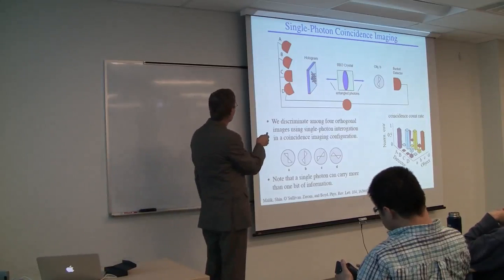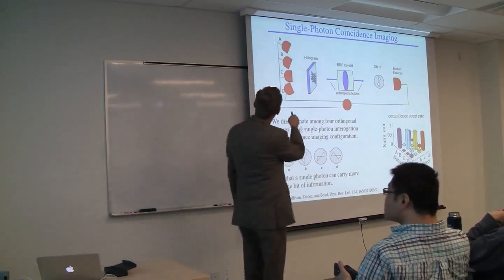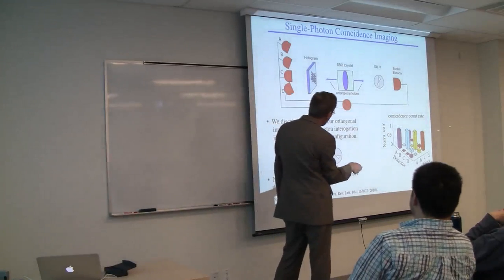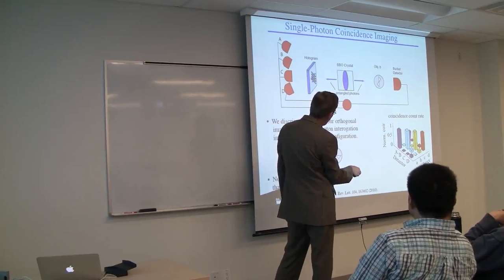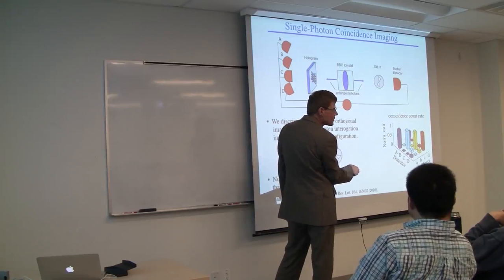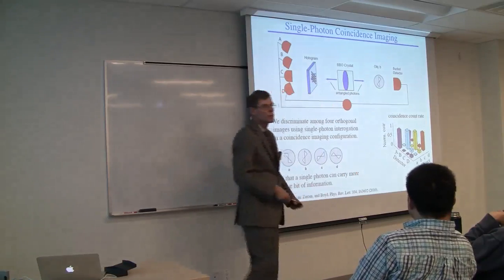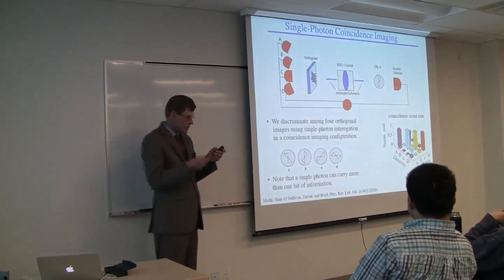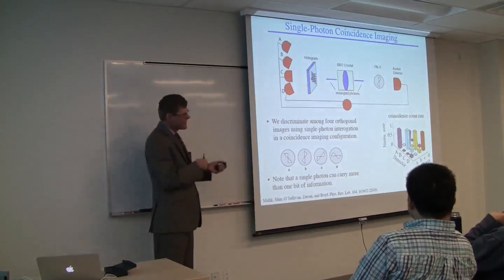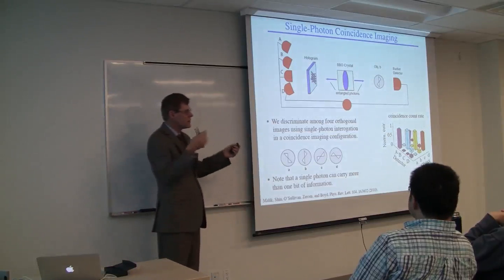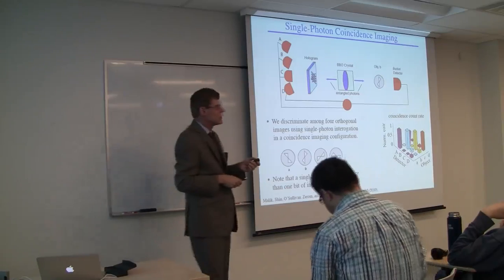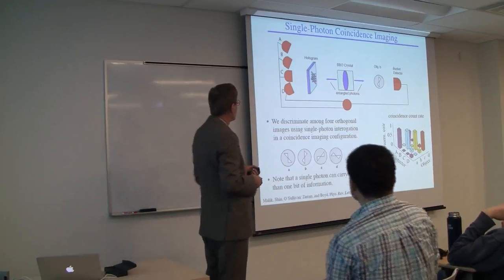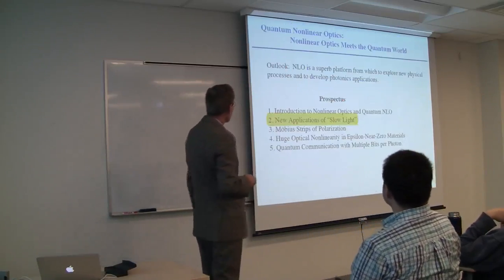Here are our experimental results. If it worked perfectly, we would get only peaks on the diagonal. The level of cross-talk is very, very small. You identified an object, even though only a single photon was used to probe that object.